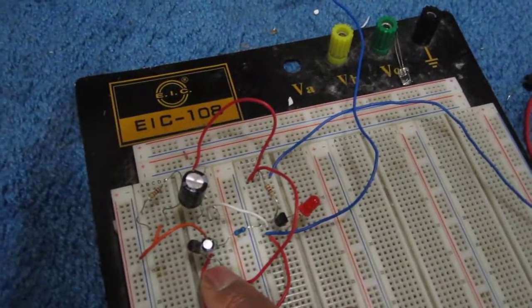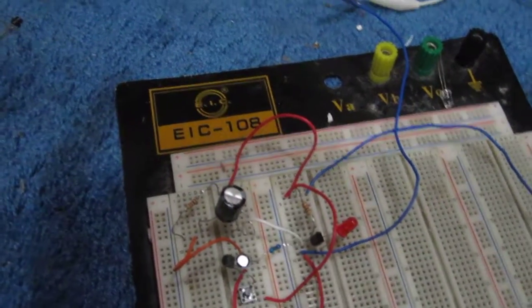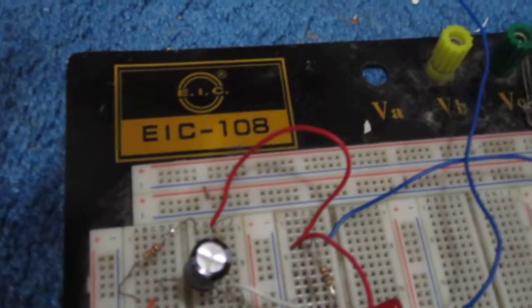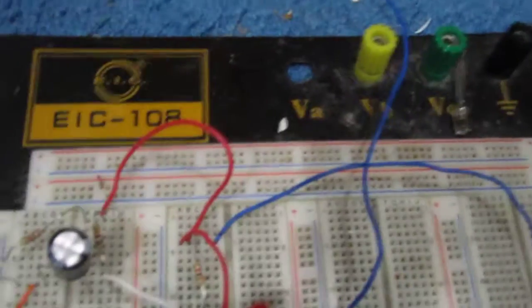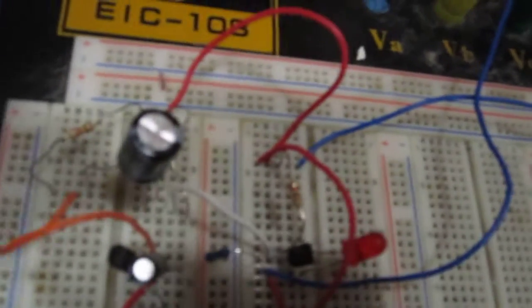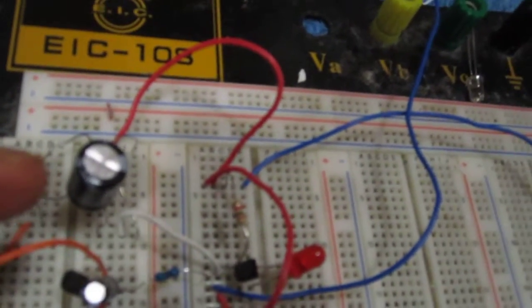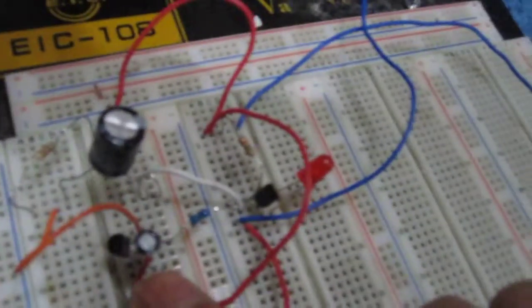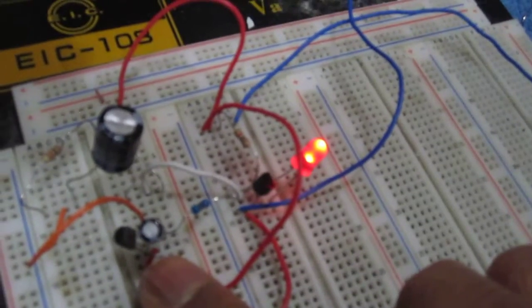How long the output stays on for is determined by the RC network that we choose. Right now I'm using a 470 microfarad capacitor and a 10k ohm resistor, and that creates the time constant that you see here.